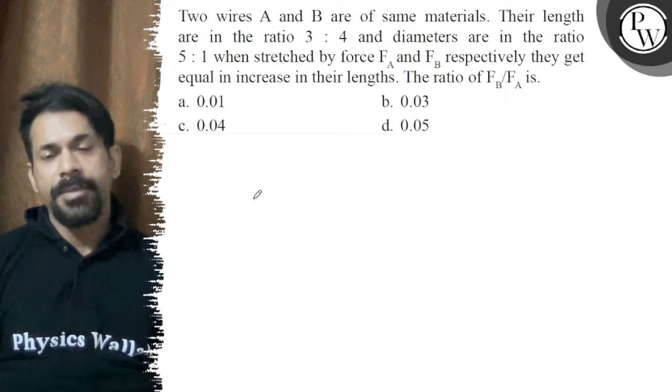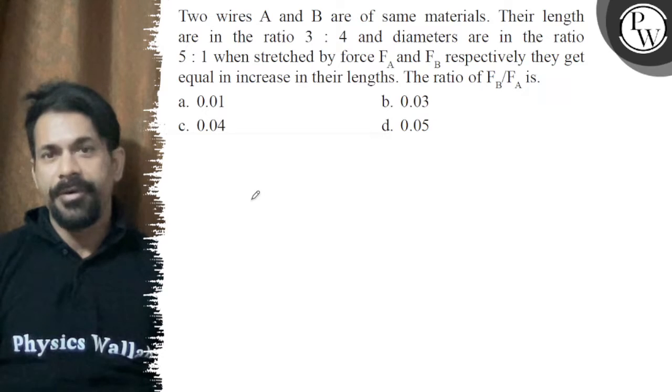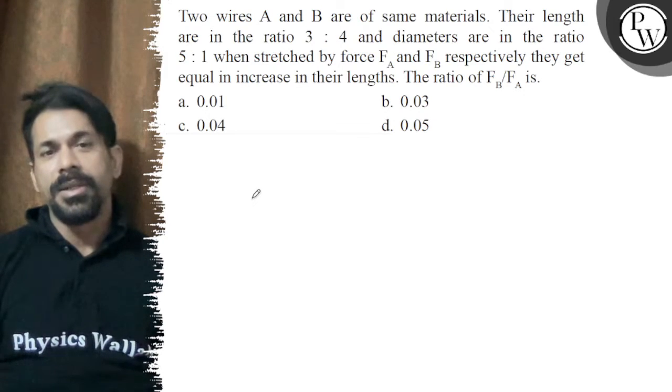Two wires A and B are of same material. Their lengths are in the ratio of 3 to 4 and diameters are in the ratio of 5 to 1. When they are stressed by the force FA and FB, they get equal increase in their lengths.